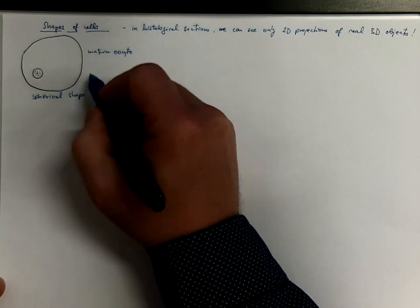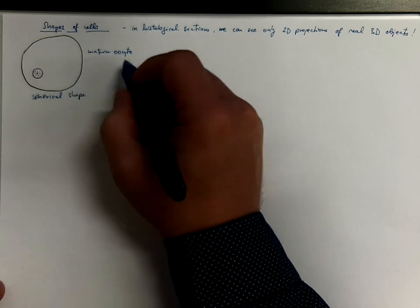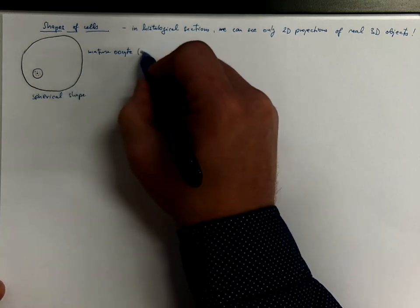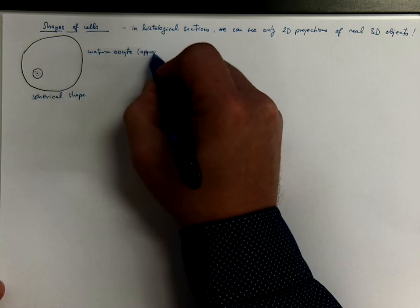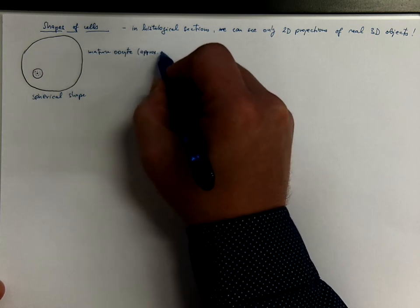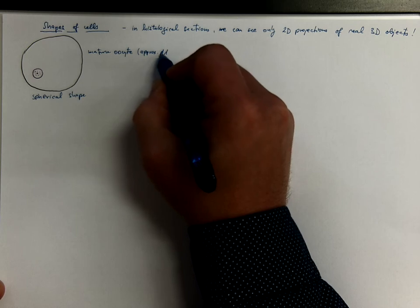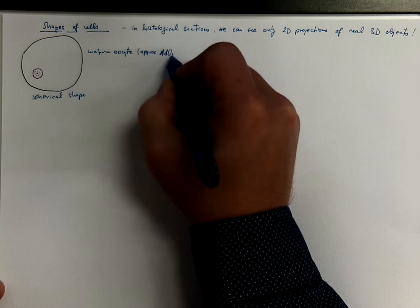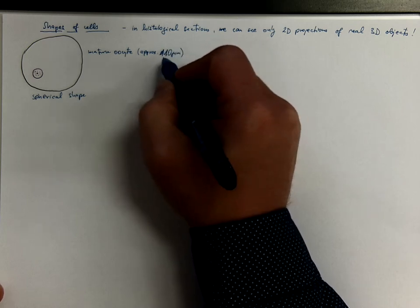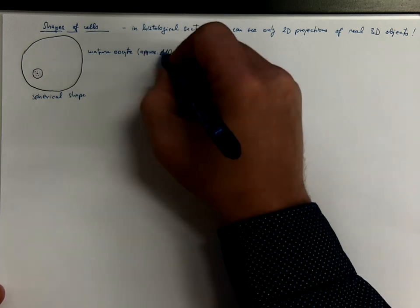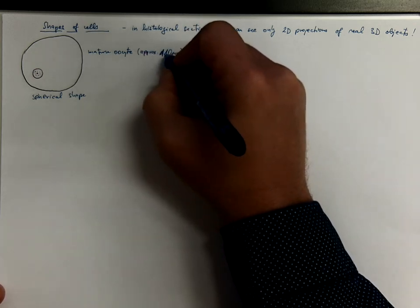Let's consider also the size in this case. Because the mature oocyte has a diameter of approximately 110 micrometers, so it could be theoretically observed with the naked eye.